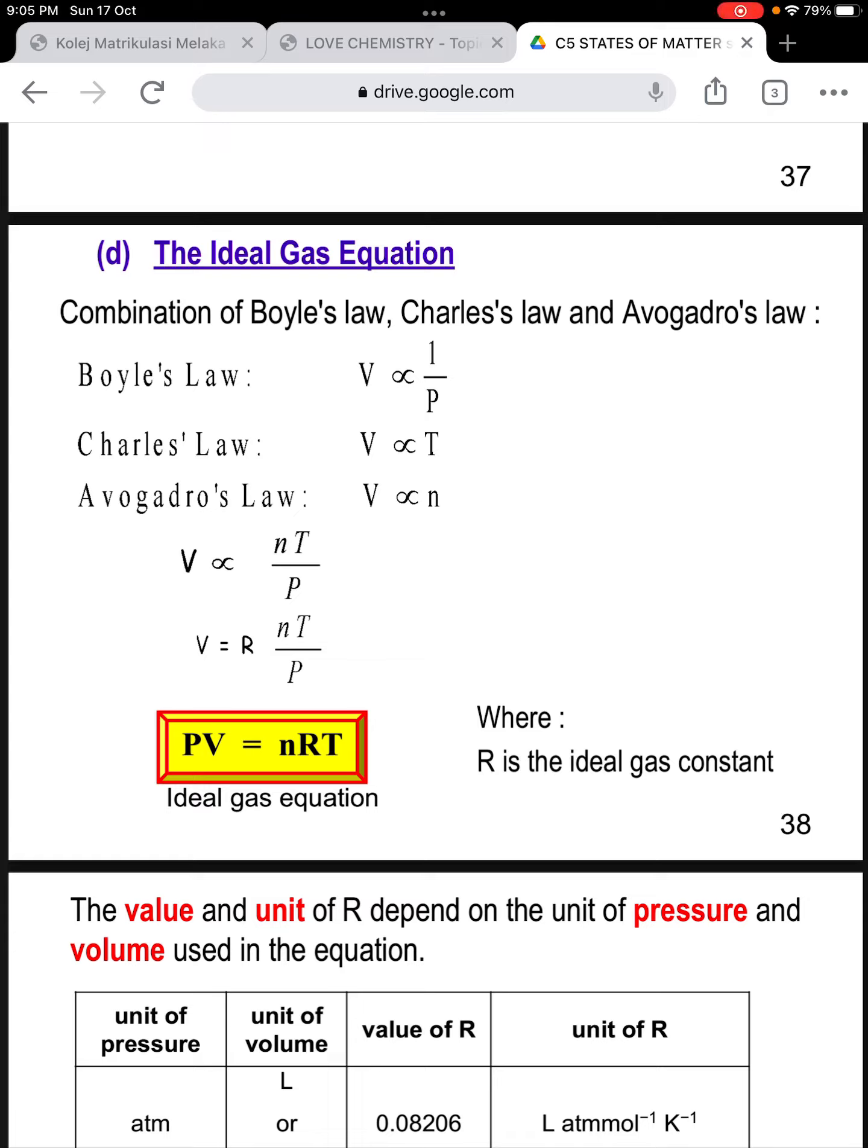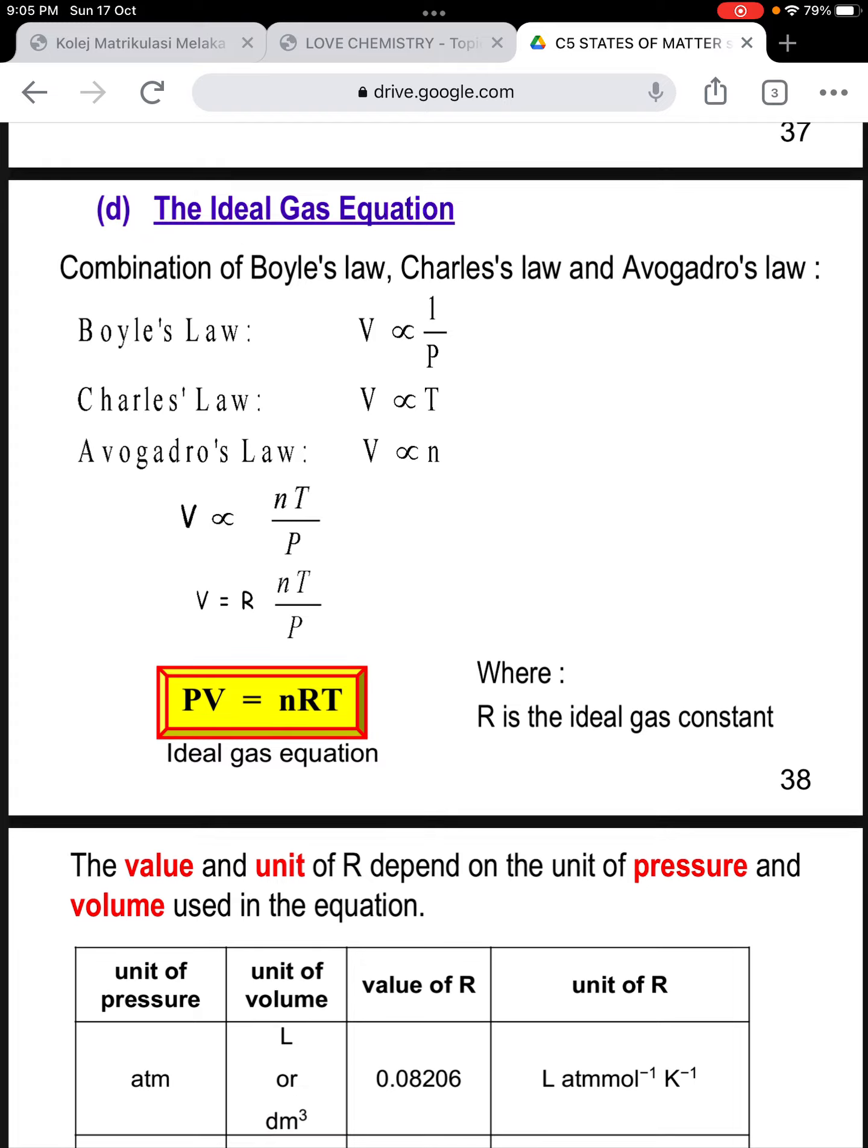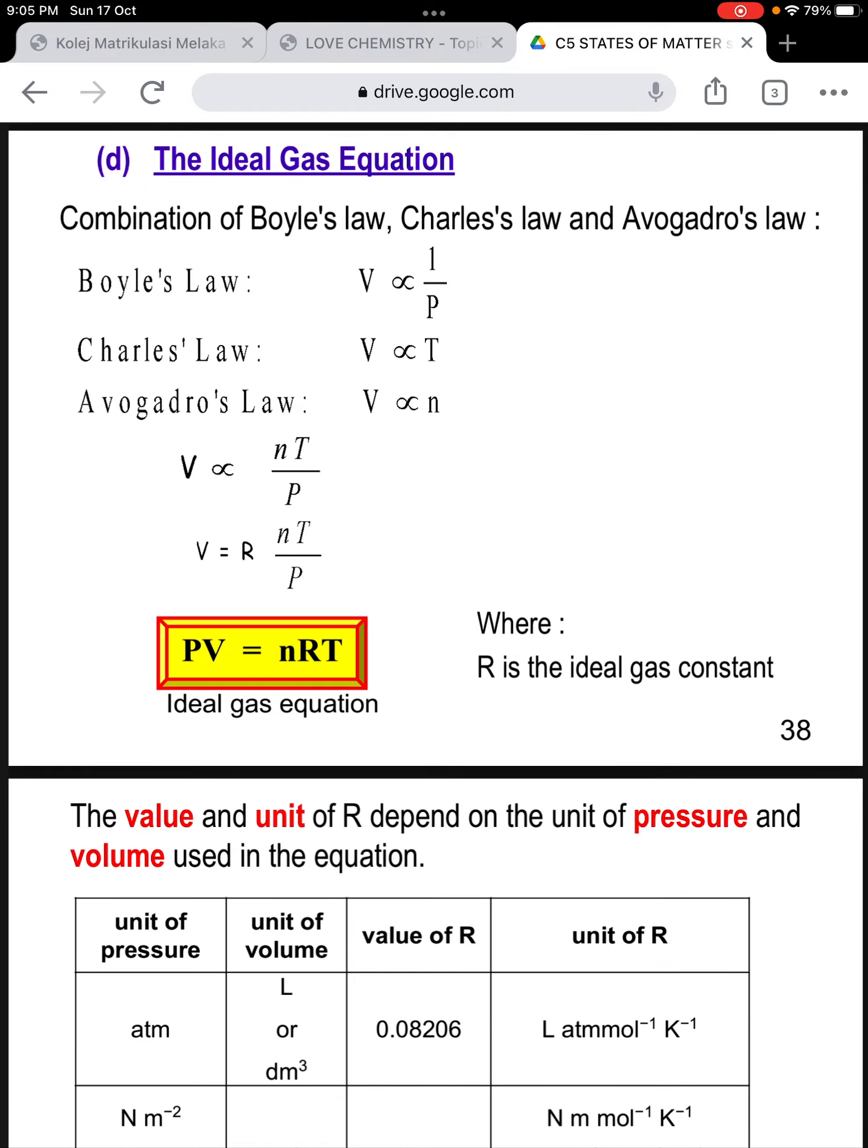Next, we look at the ideal gas equation, which is a combination of Boyle's law, Charles' law, and Avogadro's law. Boyle's law states volume is inversely proportional to pressure. Charles' law states volume is directly proportional to temperature. Avogadro's law states volume is directly proportional to the number of moles. When we combine these, we get the ideal gas equation: PV equals nRT, where R is the ideal gas constant.